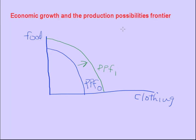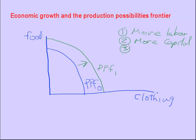And what can shift it out? Well, more labor. More capital — that is, more factories, things like that. More human capital. More land, which really means all natural resources. And number four is better technology.